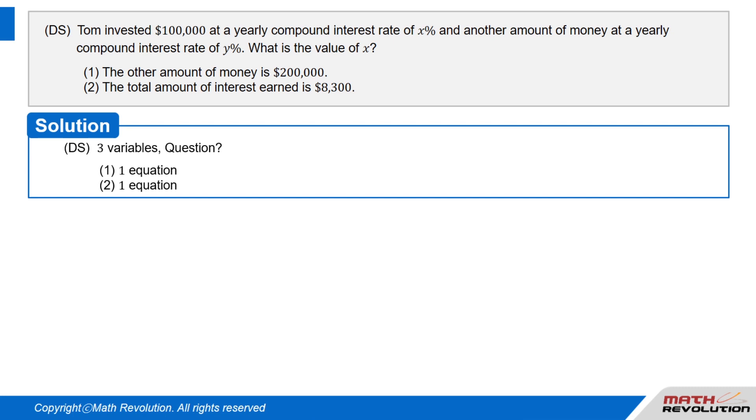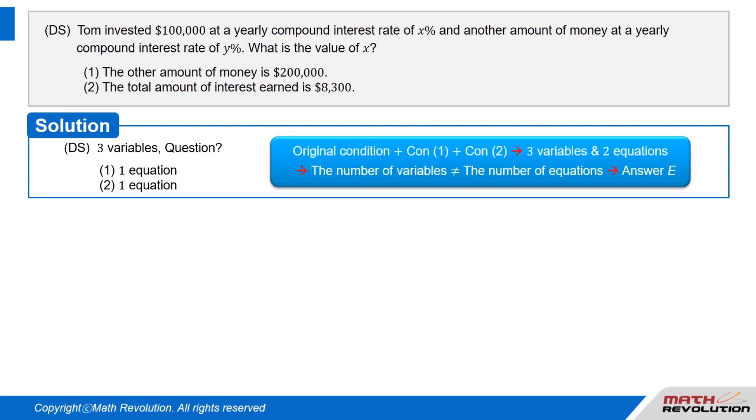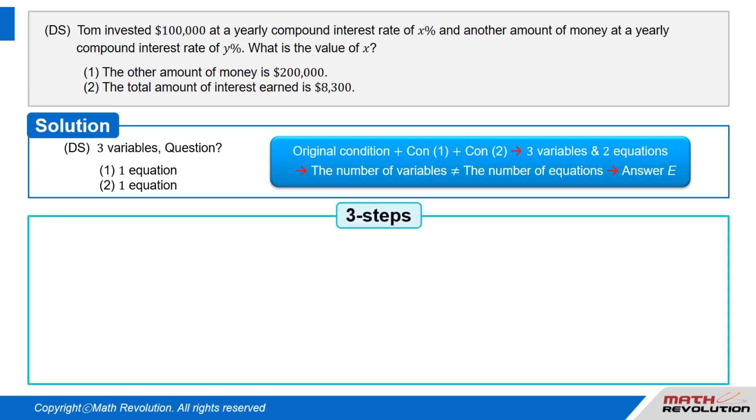DS question with three variables. Let the original condition in a DS question contain three variables. Now three variables would generally require three equations for us to be able to solve for the variables. We know that each condition would usually give us an equation resulting in a total of two equations, one each from condition 1 and condition 2. However, since we need three equations to match the numbers of variables and equations in the original condition, the unequal number of equations and variables should logically give us an answer E.